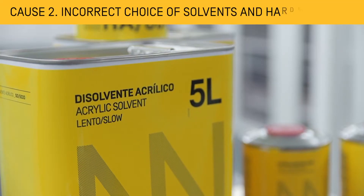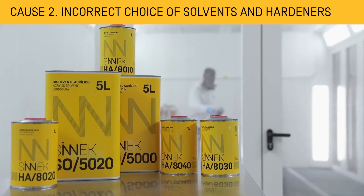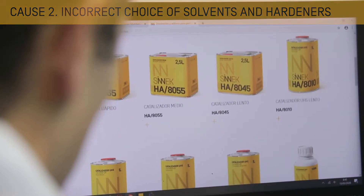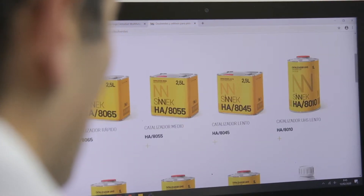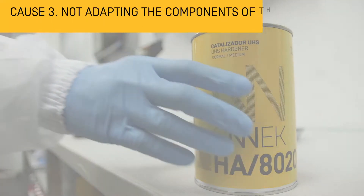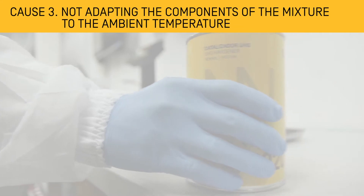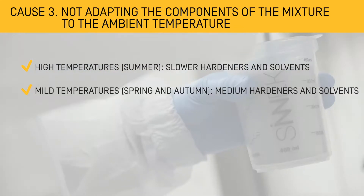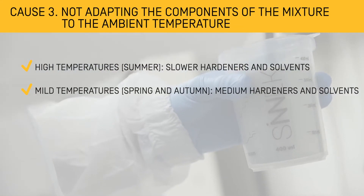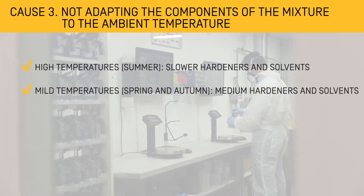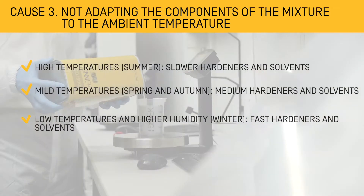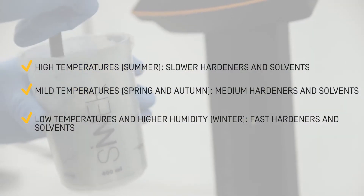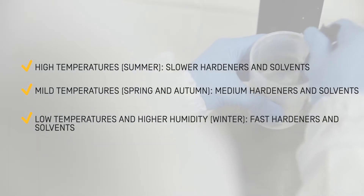We must choose the solvent and hardener to be used according to the technical datasheet and the ambient temperature when preparing the mixture. In higher temperatures we will use slower hardeners and solvents. With milder temperatures we will use medium hardeners and solvents. For low temperatures with high humidity, we will use fast hardeners and solvents.